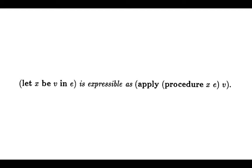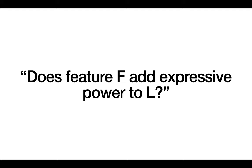But what do we mean when we say the first thing is expressible as the second, or that adding a feature does add expressive power? How do we pin that down? We're concerned with the question: does some feature F add expressive power to some language L? You might think that Turing completeness has something to say here.